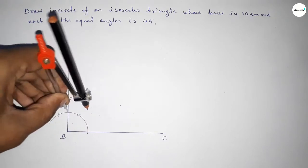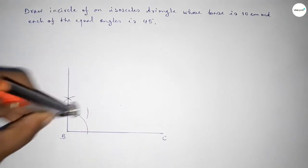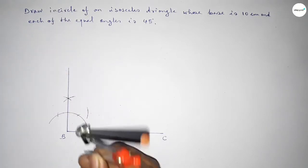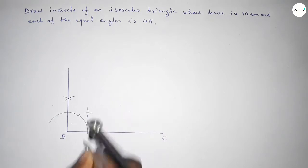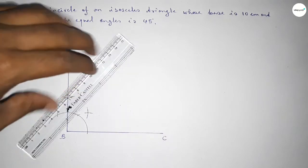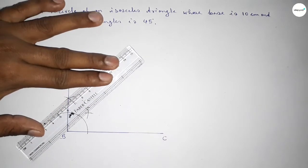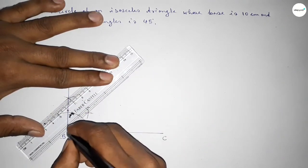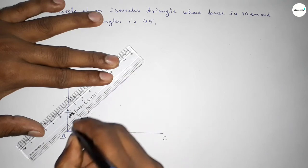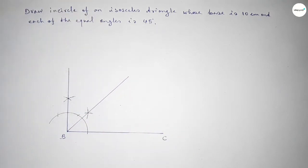Next we have to bisect this angle. With the same length putting the compass here and drawing an arc, then with the same length cutting here. Now joining this to get a 45 degree angle.